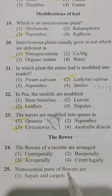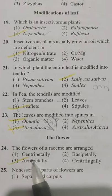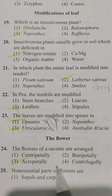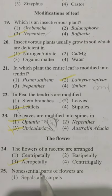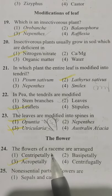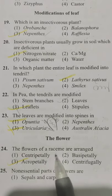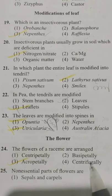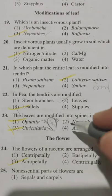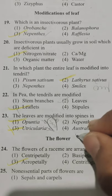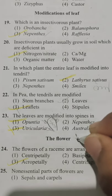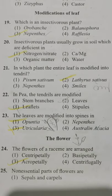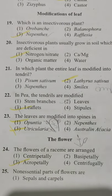Next: the flowers of a raceme are arranged — Option 1 centripetally, Option 2 basipetally, Option 3 acropetally, Option 4 centrifugally. In racemose inflorescence, flowers are arranged in acropetal succession: smaller and younger flowers are at the top, while older flowers are at the bottom. Option 3.